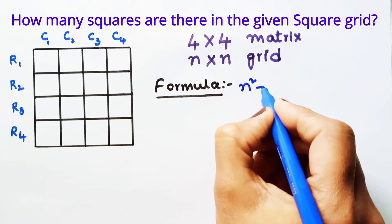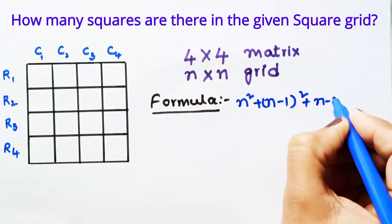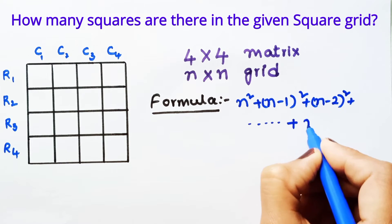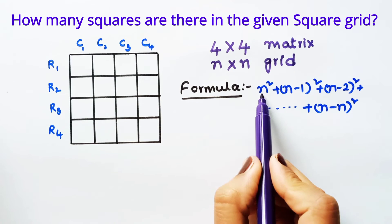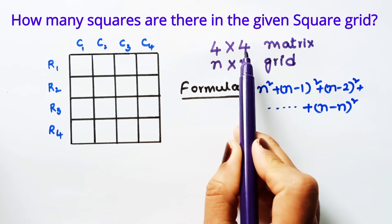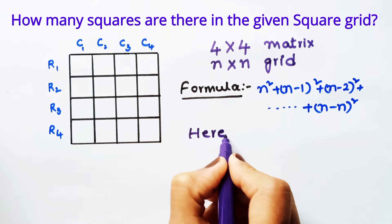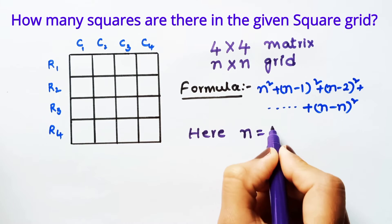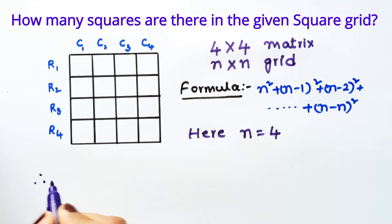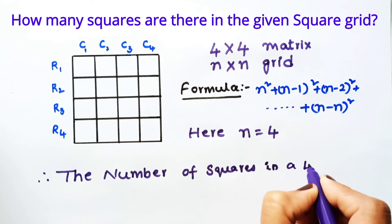The formula is: n² + (n−1)² + (n−2)² + … + (n−n)². Here, n is a natural number indicating the number of rows and columns. In our case, n = 4. Therefore, let us calculate the number of squares present in a 4×4 square grid matrix.